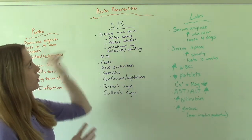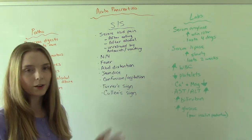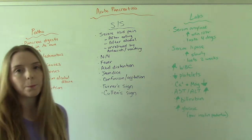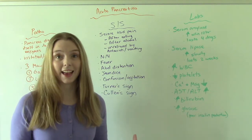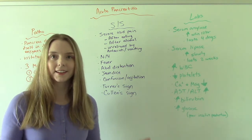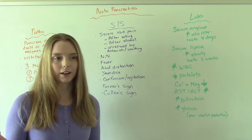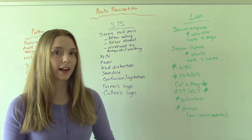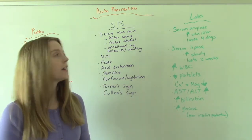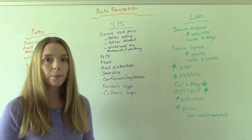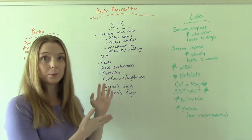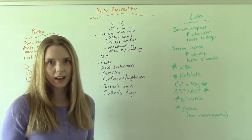So what does a patient who has acute pancreatitis look like? They're going to have severe abdominal pain — like 10 out of 10. A lot of things can cause that, but what's special here is it usually occurs after eating a big meal or after drinking alcohol. They might take antacids to help because it's after a big meal, but the antacid does nothing.